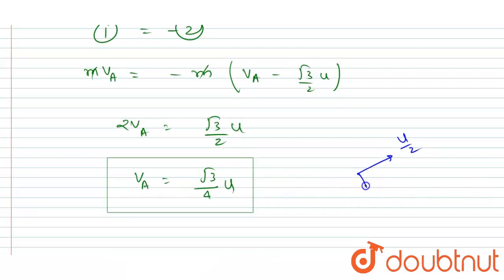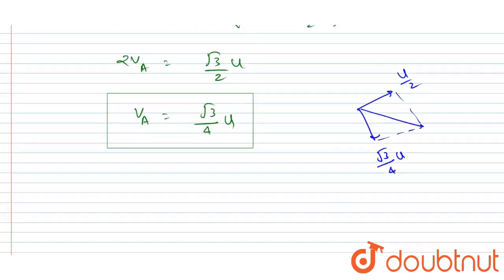And if you talk about the velocity of B, velocity of B will be having u by 2 in a direction perpendicular and the same velocity as that of A in the along the string direction. So you can further calculate the velocity of B also by Pythagoras. So you will write it is u by 2 whole square plus root 3 by 4 u whole square, under root.